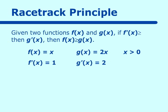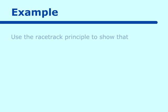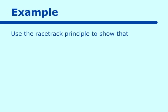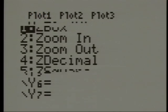And of course we can say that vice versa. Given two functions f of x and g of x, if f prime of x is less than or equal to g prime of x, then f of x is less than or equal to g of x. Let's use the race track principle to show how to compare two functions. The functions we want to compare are ln of x and x minus 1. Now if we put both of these functions on our calculator and graph them in zoom 4, we see that the line is actually the tangent line to the curve of ln of x.